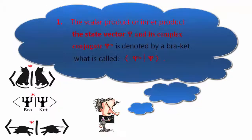3. The scalar product or inner product of the state vector ψ and its complex conjugate ψ* is denoted by a bracket, what is called bracket ⟨ψ*|ψ⟩.